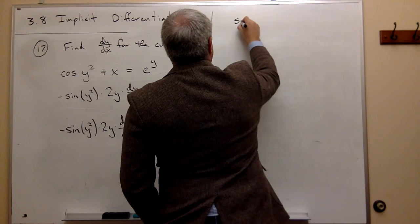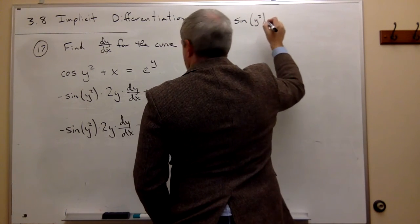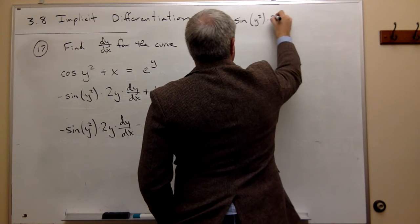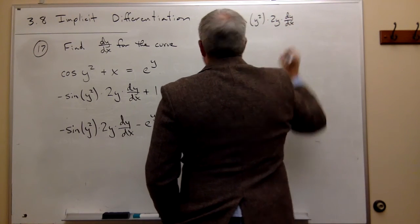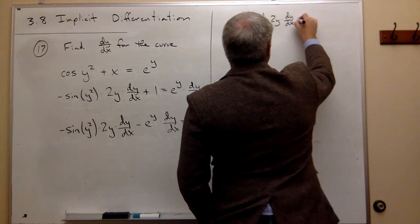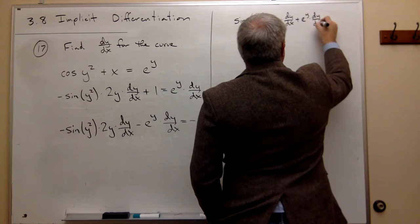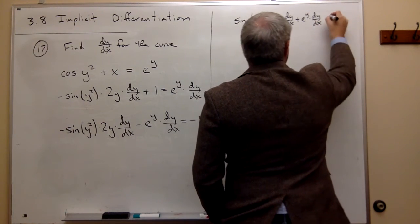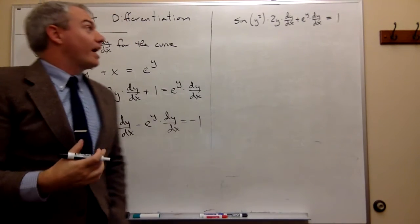So I'll write it as sin(y²) times 2y times dy/dx plus e^y times dy/dx equals 1. Now I'm ready to factor dy/dx out of the left hand side.